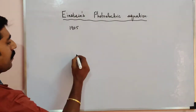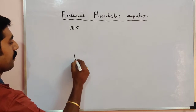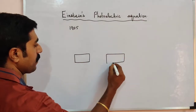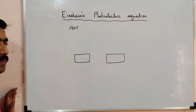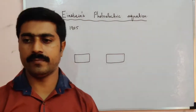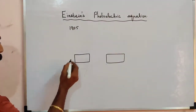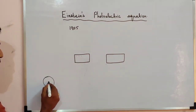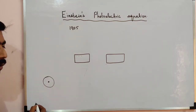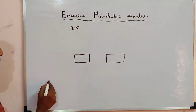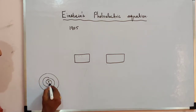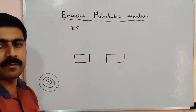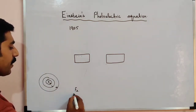According to Einstein, here on a metal surface, the metal is made up of atoms or molecules. The central one is the nucleus, and we know the orbits: the first K shell, L shell, M shell, etc. For example, if the material is made up of iron (ferrous), with atomic number 26.